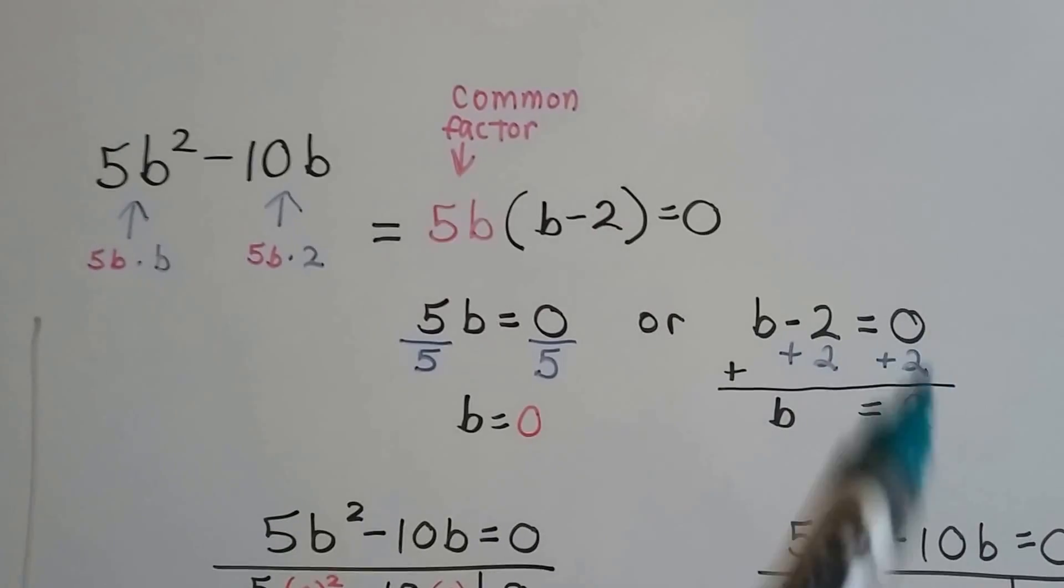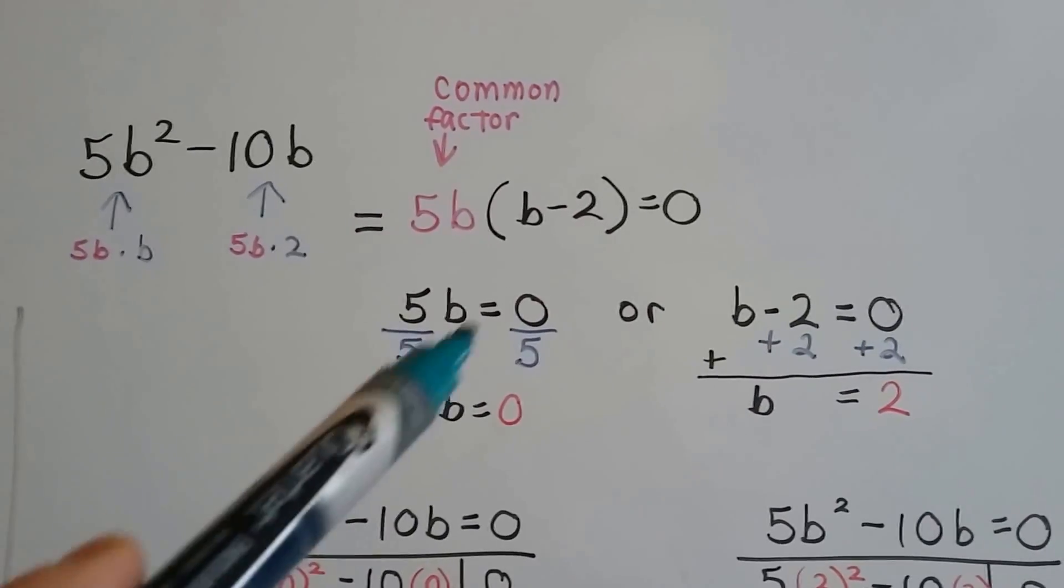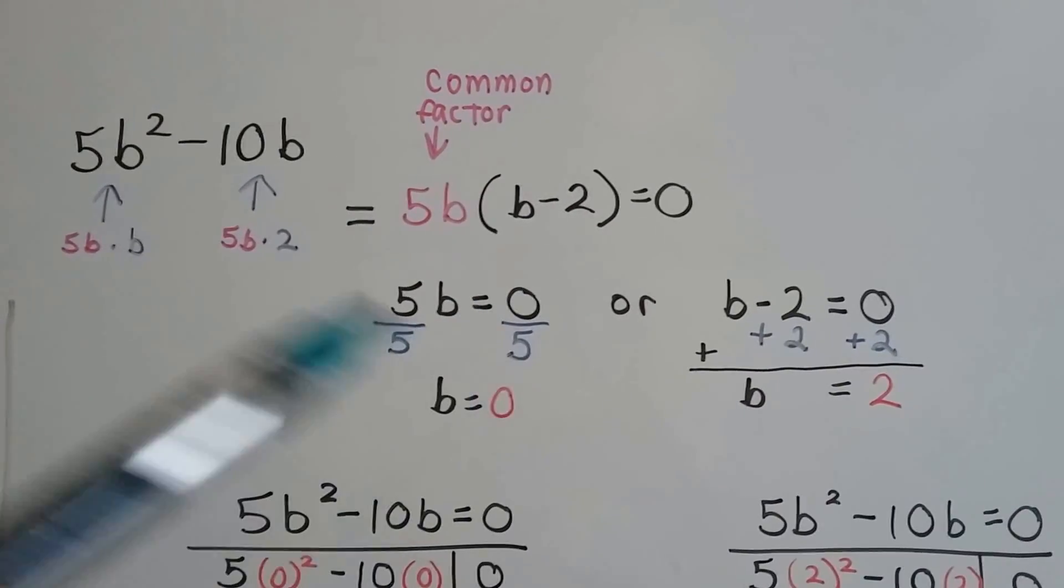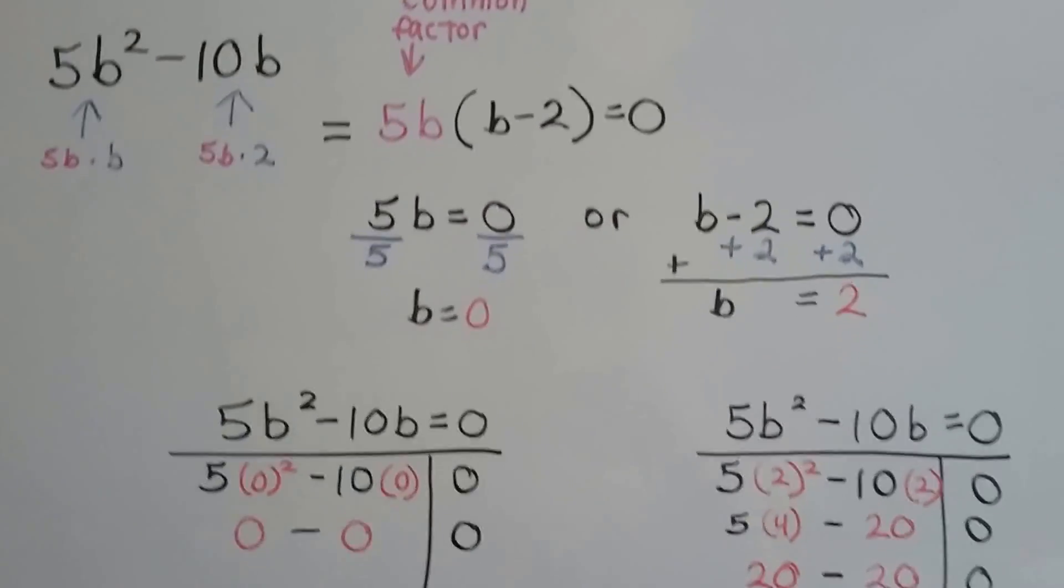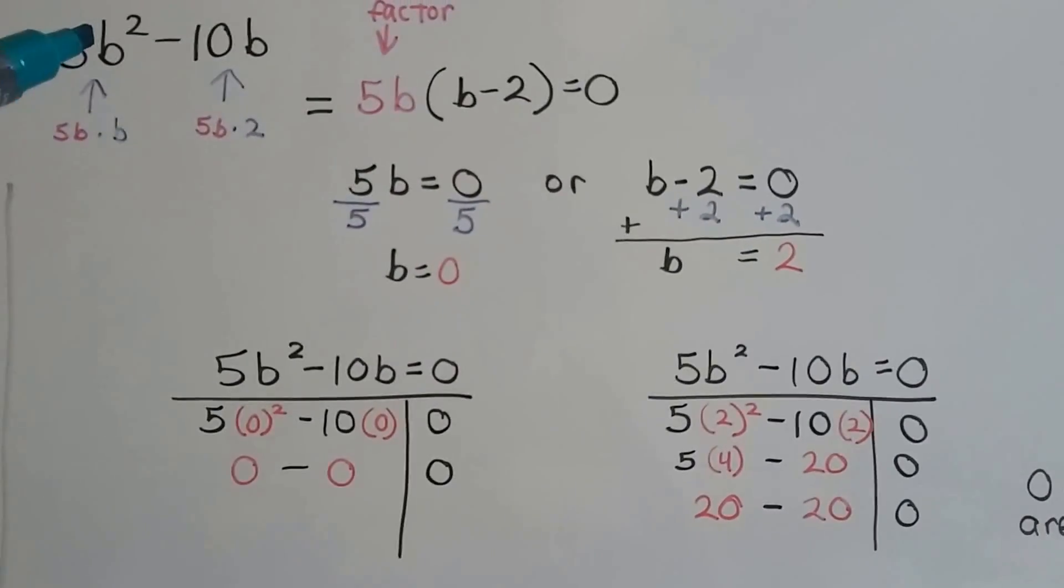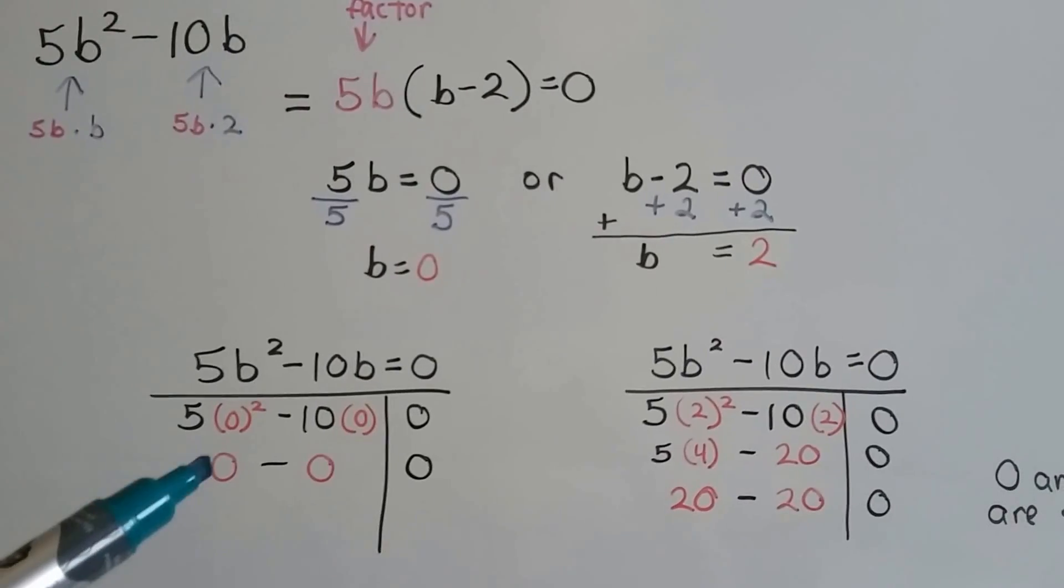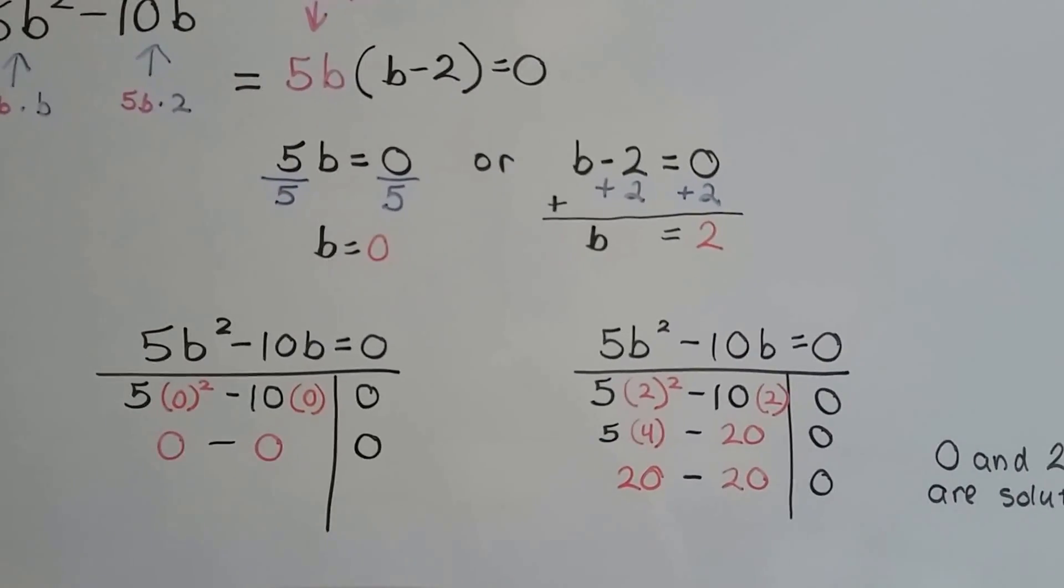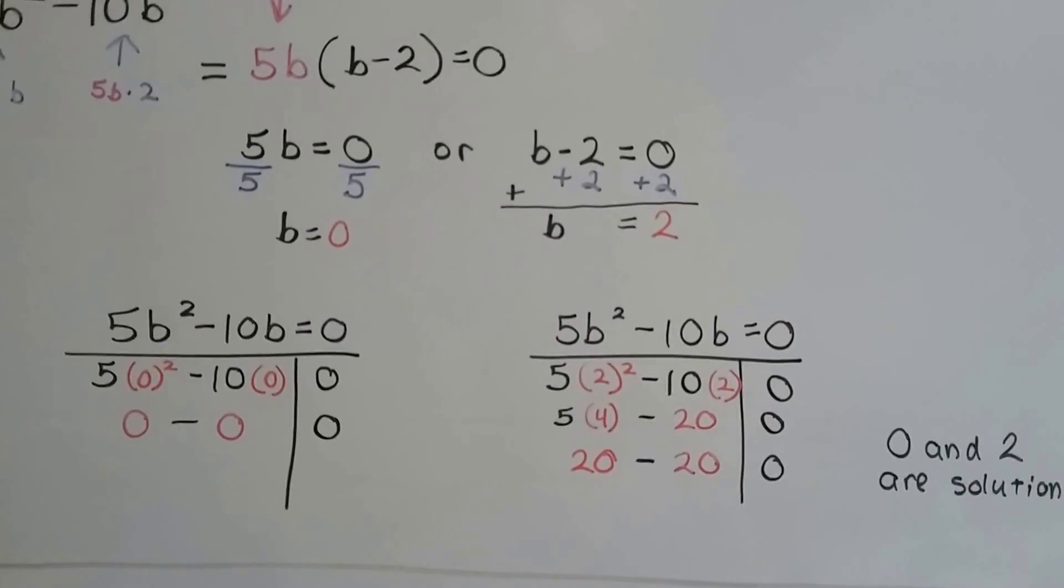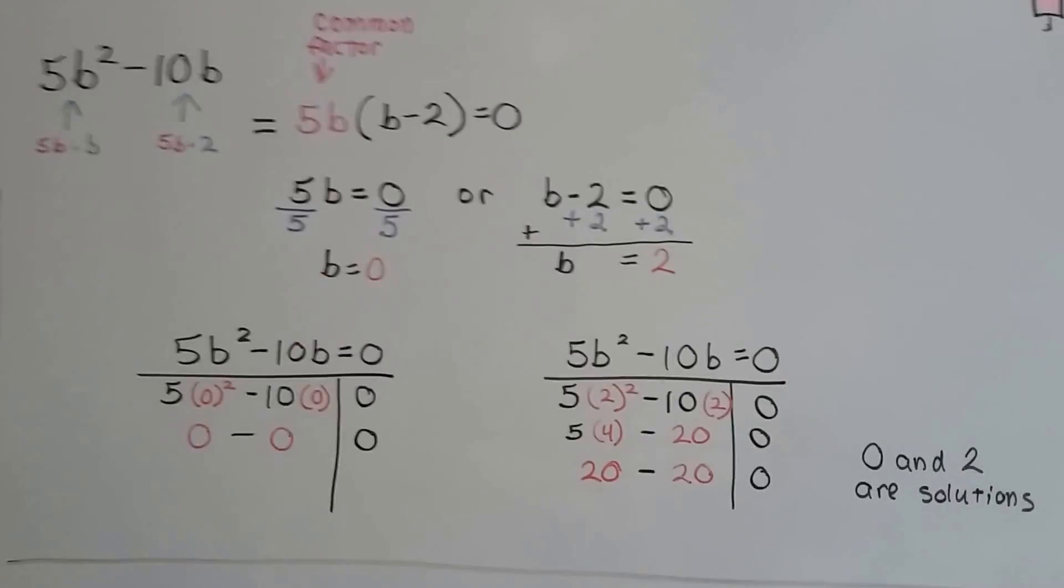5b = 0, or b - 2 = 0. This is going to be 0 over 5, which is nothing, so it's 0. And this is 2. We plug them into the original equation set to 0, and we see 0 will work, and we can see 2 will work. So 0 and 2 are our solutions.